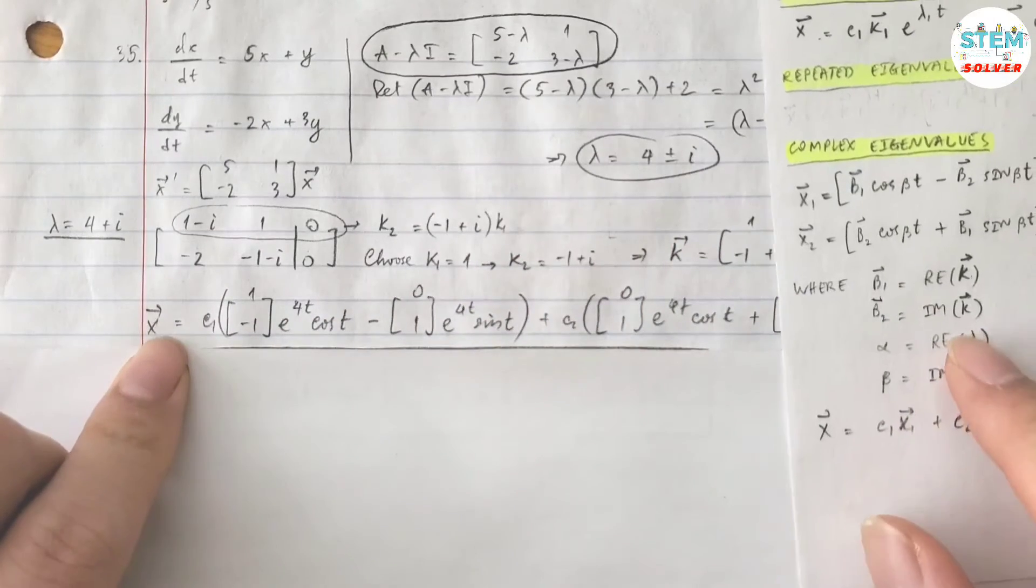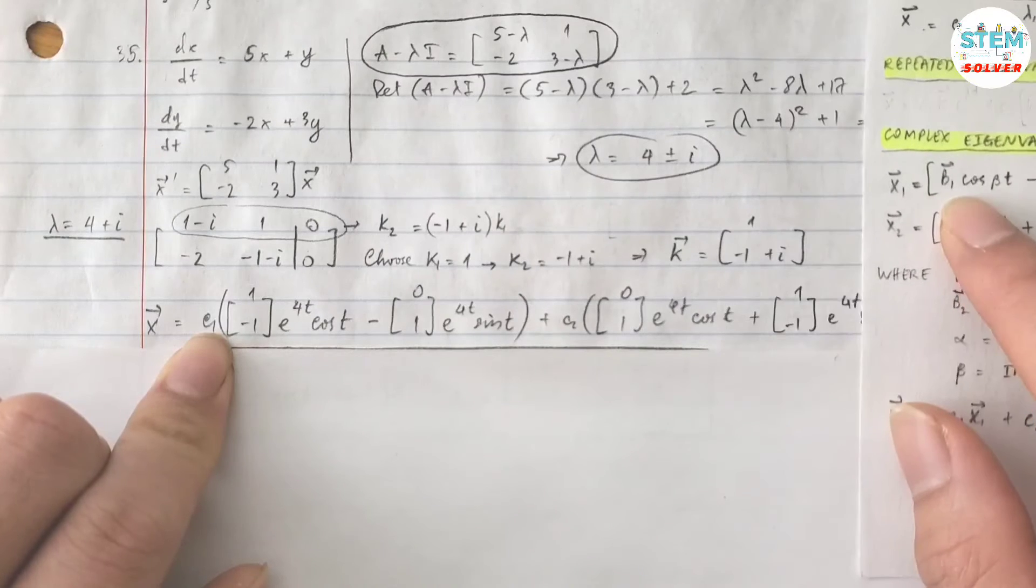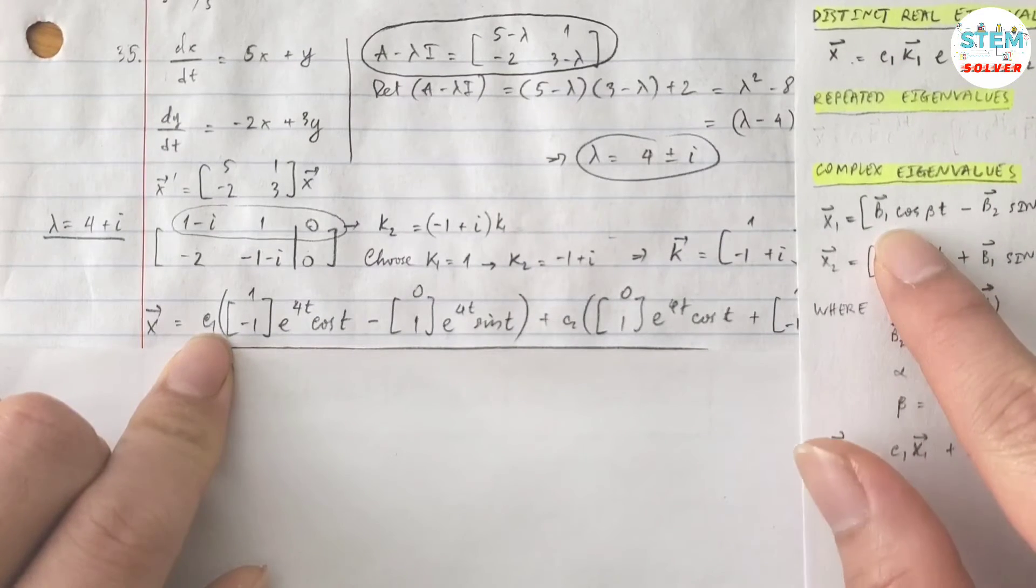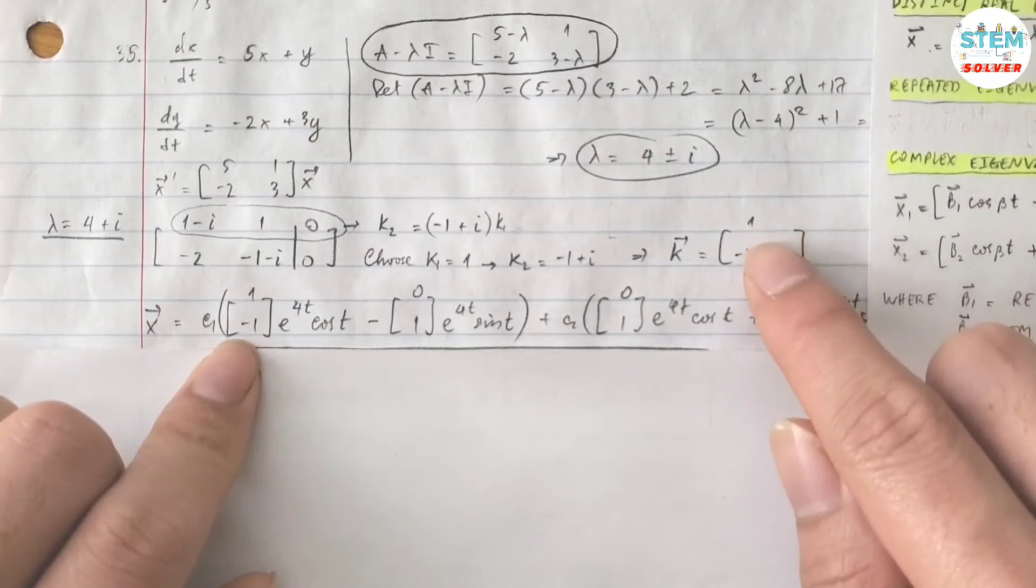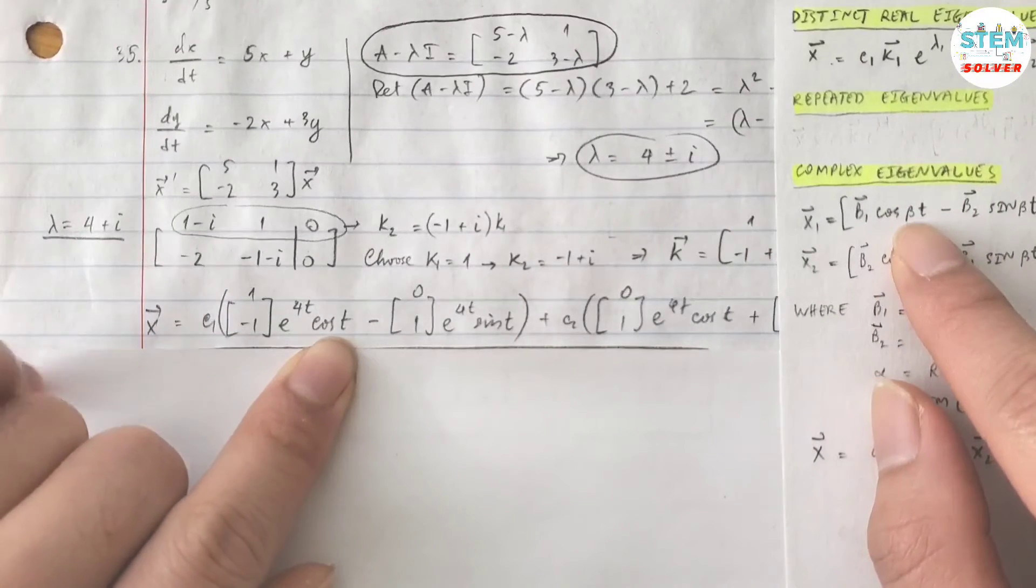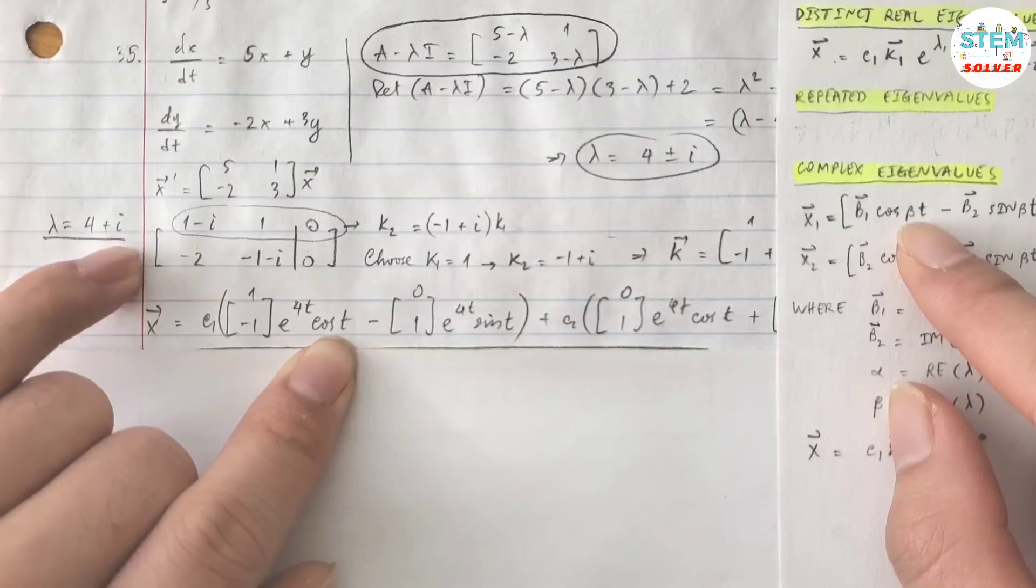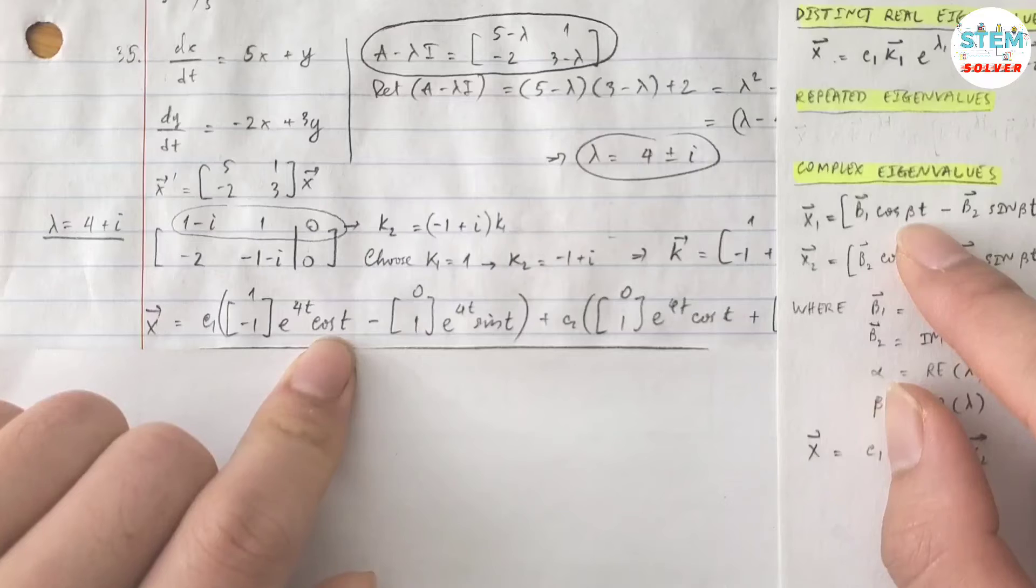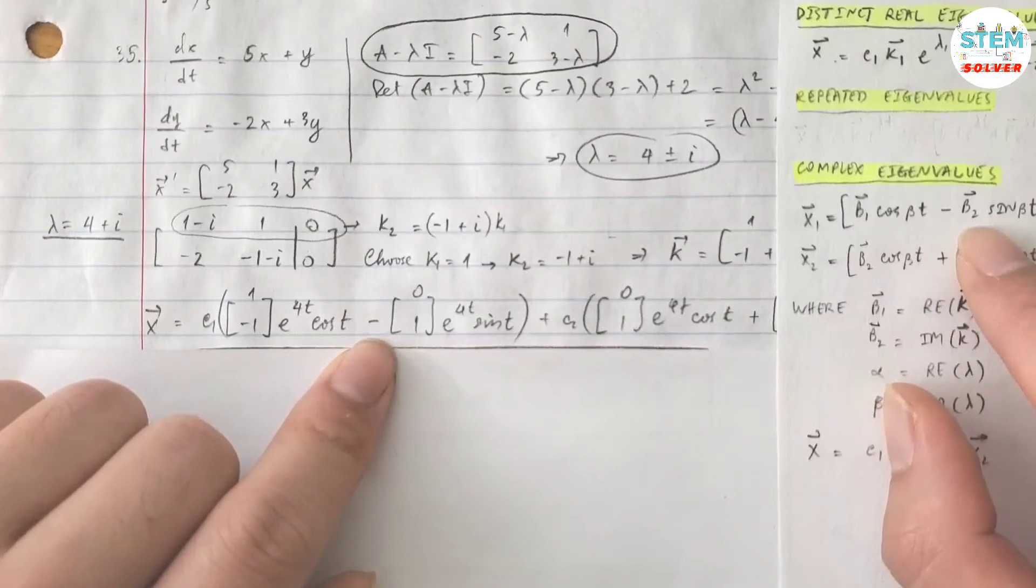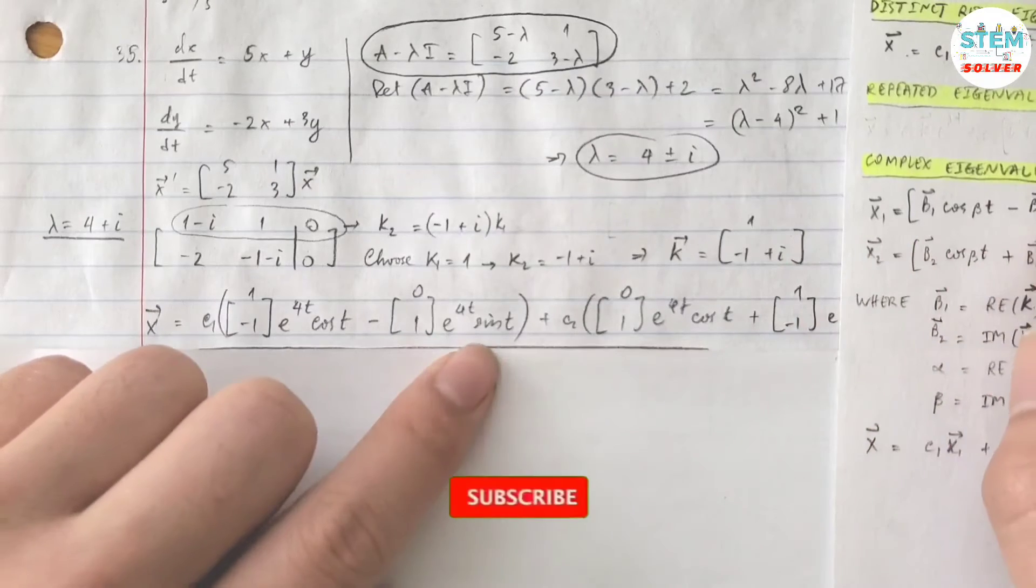So let's go back here. You have vector x equals c1 times vector x1, which is vector b1 [1, negative 1] times cos(beta t). Beta is imaginary part of lambda which is 1, so you have cos(t) minus b2, the imaginary part of k which is [0, 1] times sin(t).